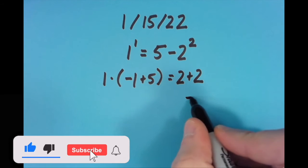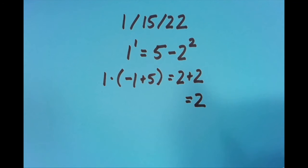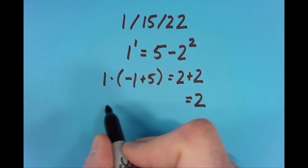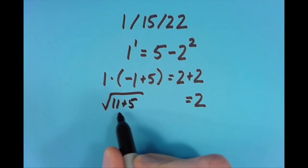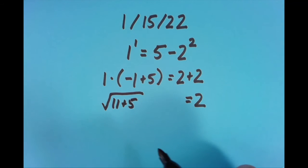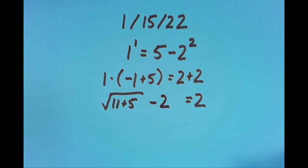I then said, well, what if I put the equal sign in the last place? And for this one, what I came up with was the square root of 11 plus 5. So that gives us 16. The square root of 16 is 4, and 4 minus 2 equals 2.